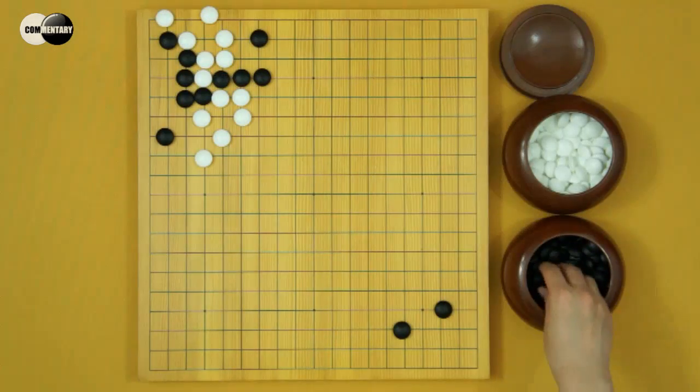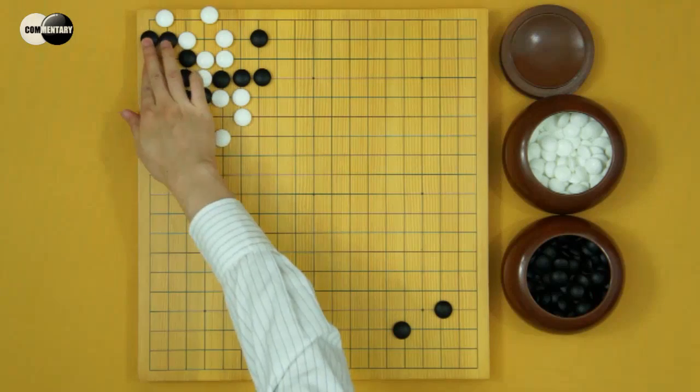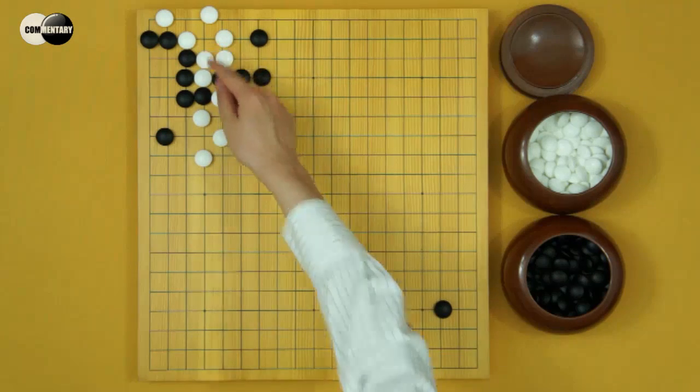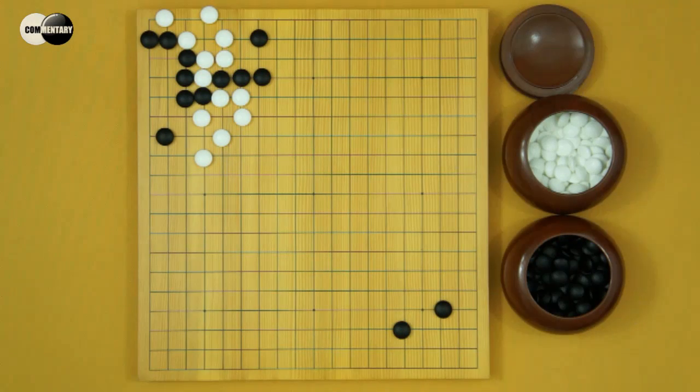This is White's sente. Black descends. White's outside, the Black is thick. But White's inside is not a living group yet. It's another diagram that White may choose.